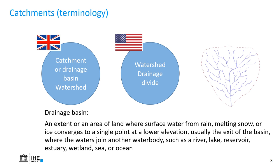A drainage basin, which is used in both British and US English, can be defined as an area of land where all the water that originates from different kinds of precipitation converges to one single outlet. And this can be another river, a bigger river, or it can be a lake, reservoir, or a wetland, or the sea or the ocean.